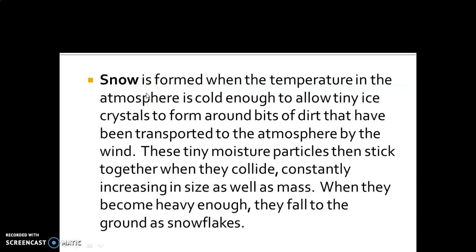Now let's learn about snowfall. In high altitude areas, snowfall occurs. Altitude means height. As height increases, temperature decreases. So the temperature of the atmosphere decreases with an increase in altitude. When temperature decreases, the water molecules present in the atmosphere are converted into tiny ice crystals. At very low temperatures, these water droplets convert into small ice crystals and fall on the earth's surface in the form of snow.